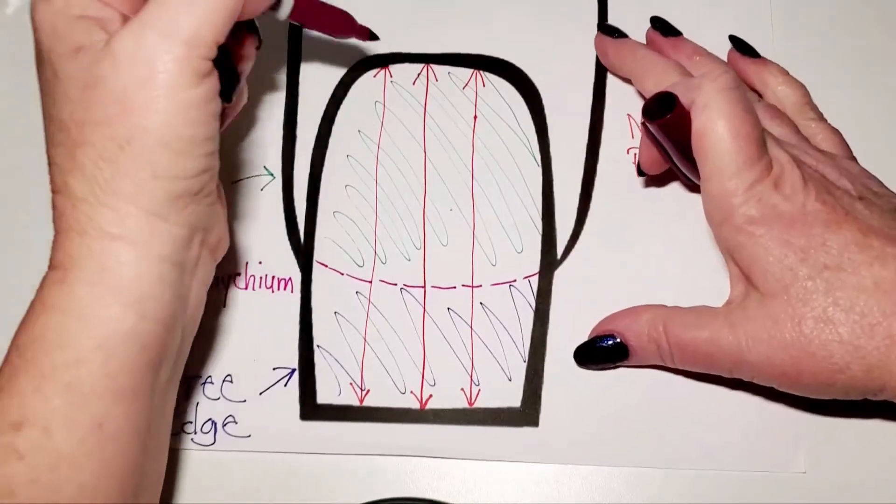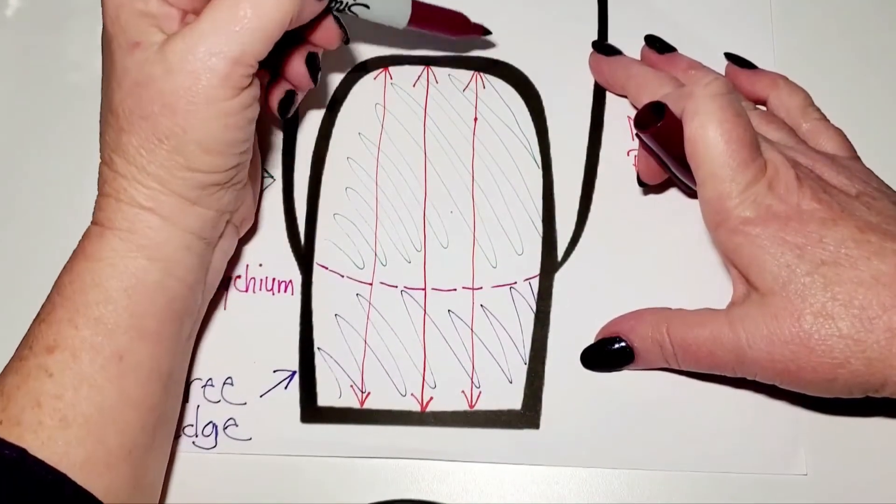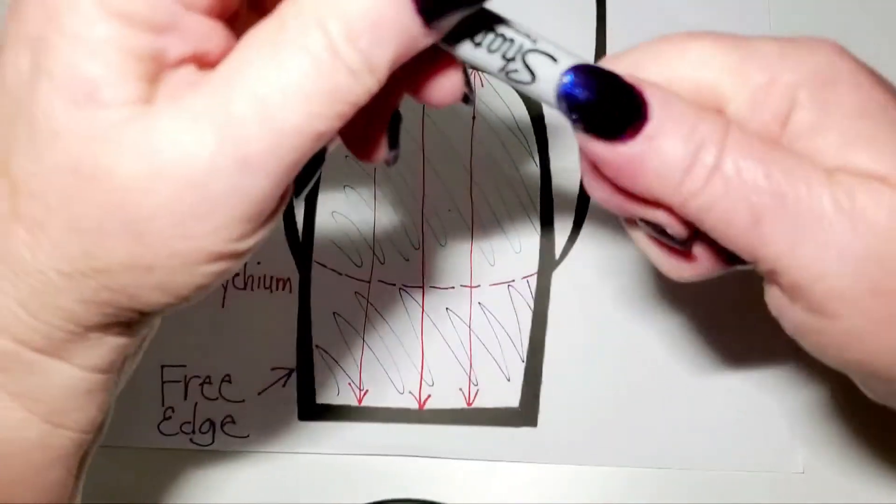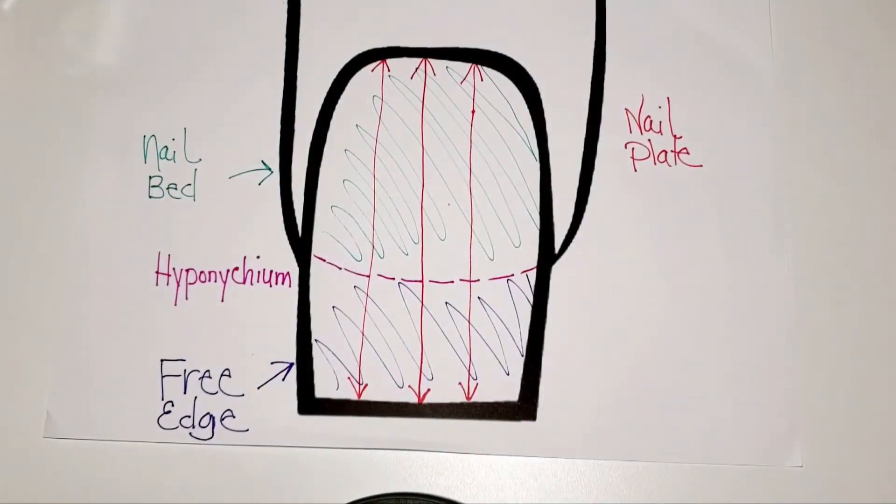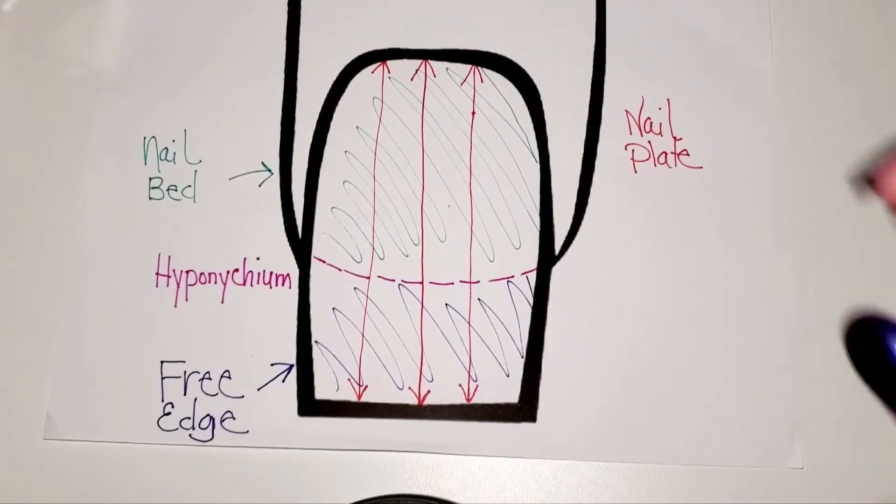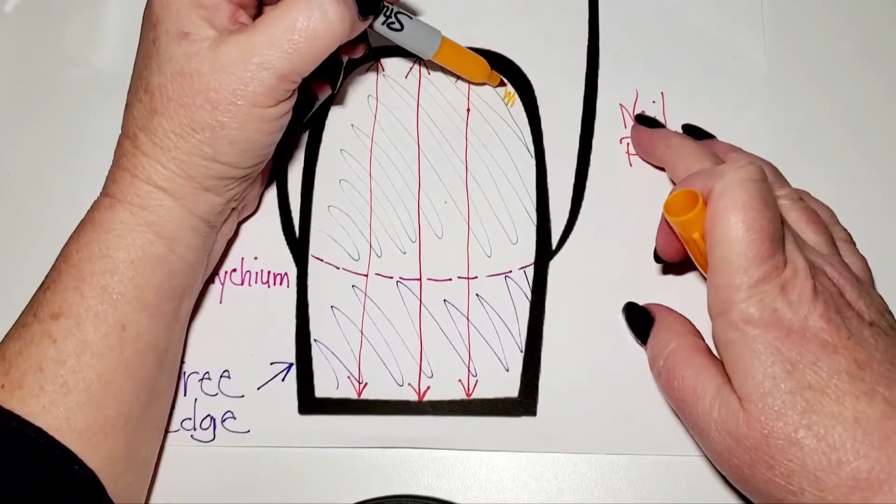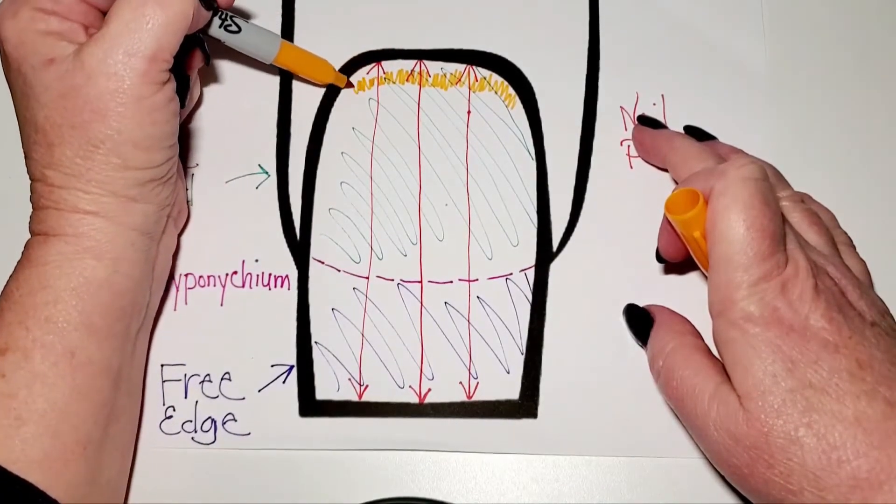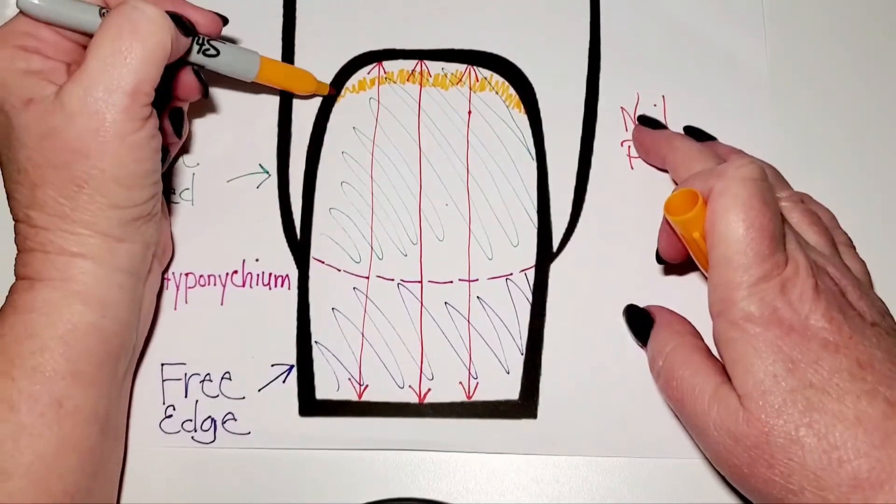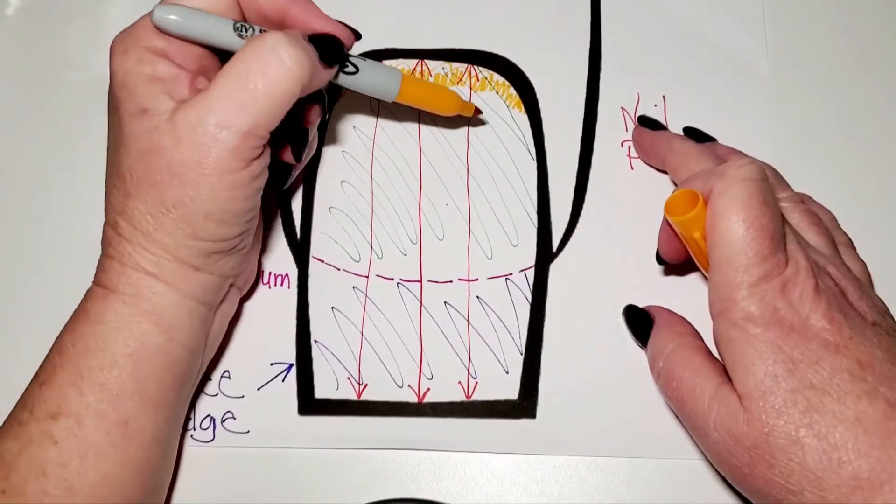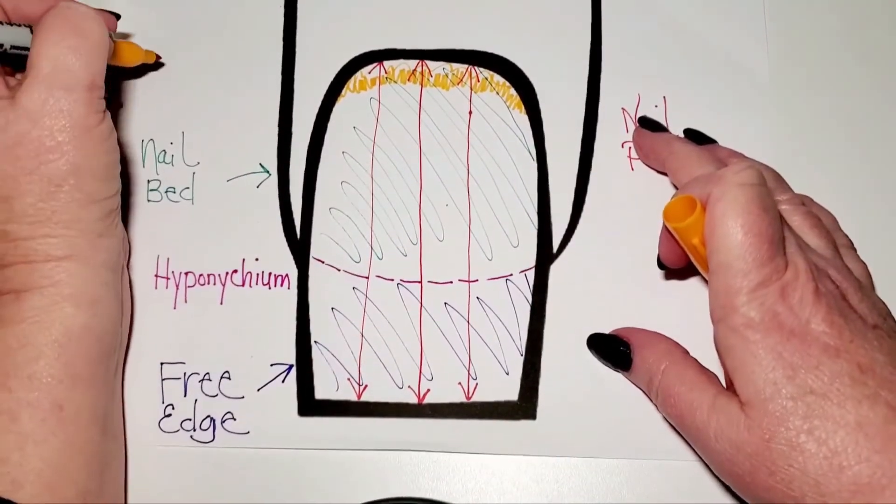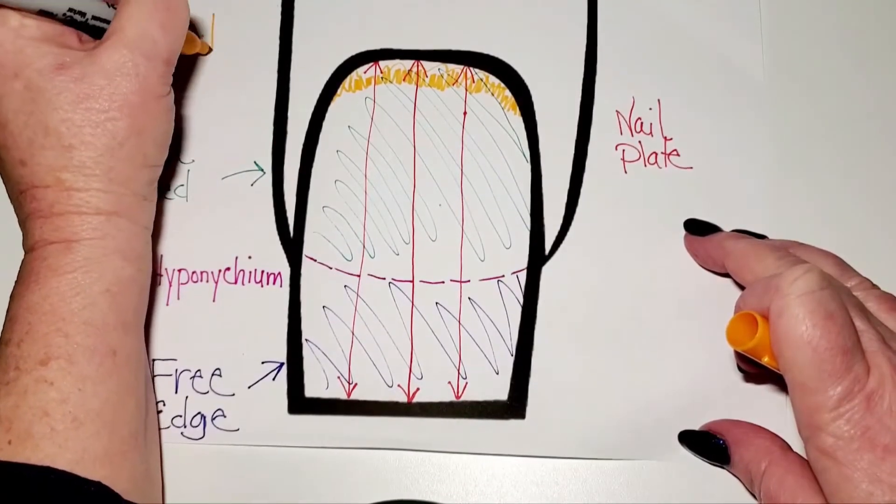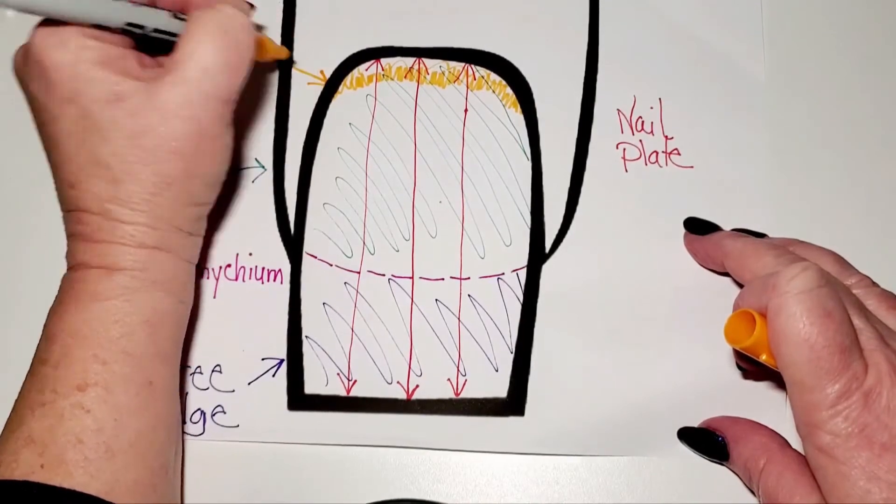Another part we're going to talk about is the cuticle. Now, people can confuse the cuticle and the eponychium. Your cuticle area can sometimes be kind of raggedy looking. And you take your cuticle pusher or your orange wood stick or whatever you're using as a tool for that. So this whole area here is your cuticle, and you push that back. That is dead skin. That is not live skin.